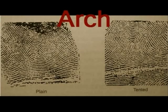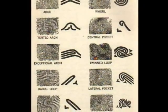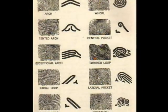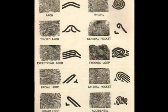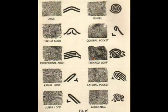Arches slope upward and then downward. They have no deltas or cores. Arches make up only 6% of all fingerprints. Tented arches contain an angle or upthrust and look similar to a loop. Plain arches contain a rise or wave in the center. Composites of level 1 identification are a combination of loops, whorls, and arches. Any combination may occur, such as two loops, a loop and a whorl, or an arch and a loop.